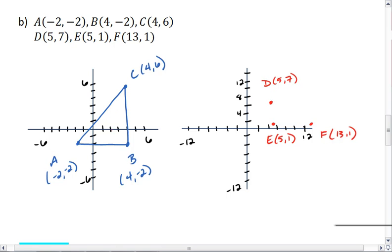You should notice I get a right triangle for the blue triangle, and I also get a right triangle for the red triangle. The blue triangle has a side that's length 8 and a side that's length of 6.